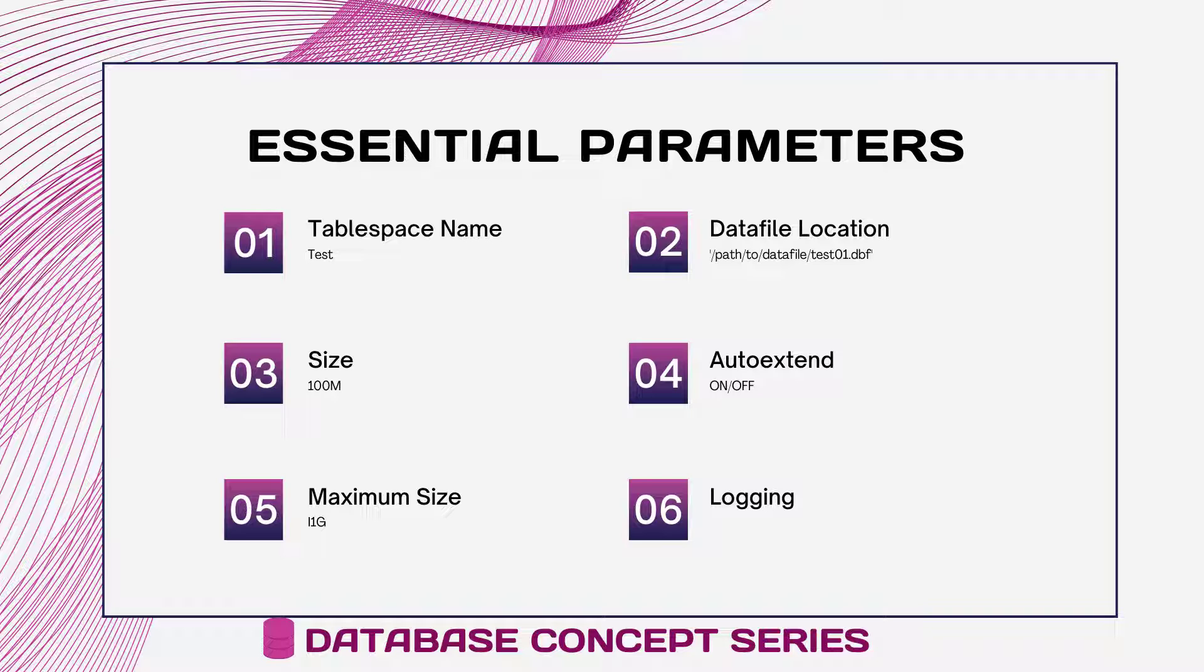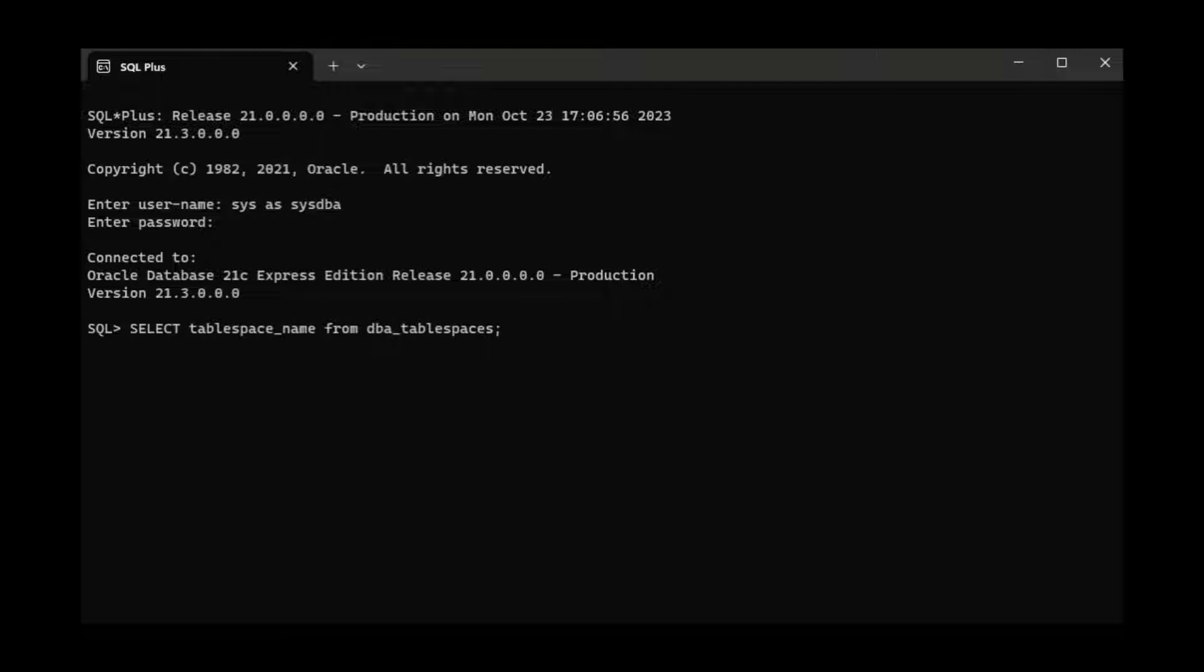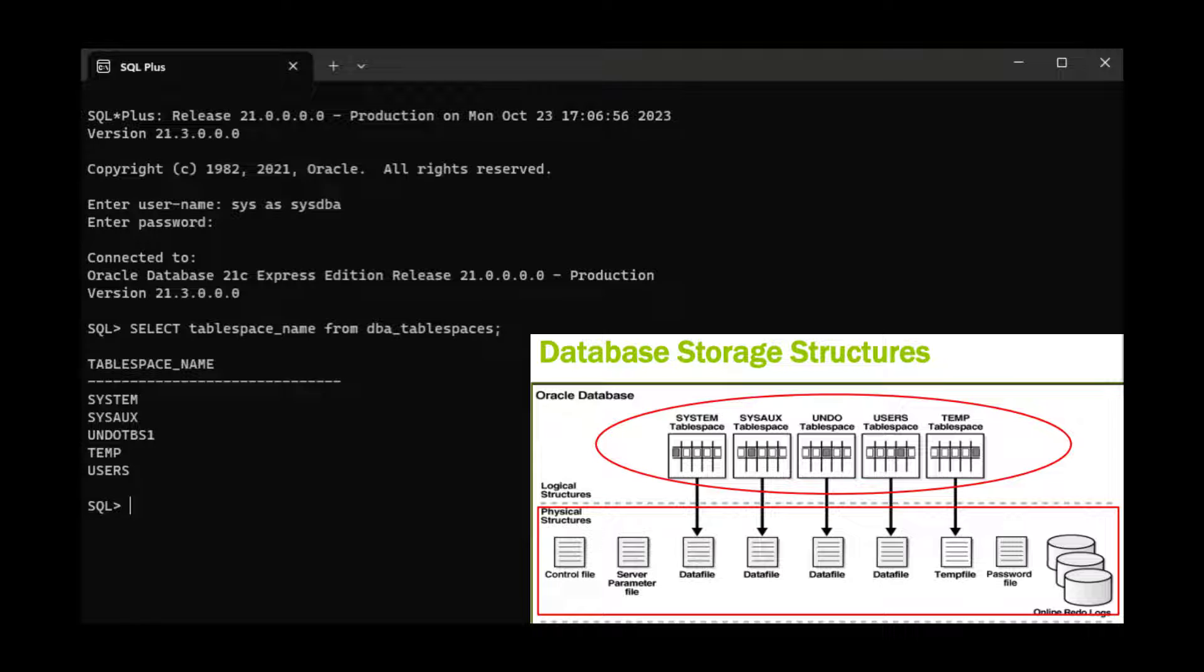Now let's create a tablespace named test with these parameters. First, ensure that you have the necessary privileges to create a tablespace. You'll typically need DBA or CDBA privileges. By using the following command SELECT tablespace_name FROM dba_tablespaces, you can check what tablespaces are already available.